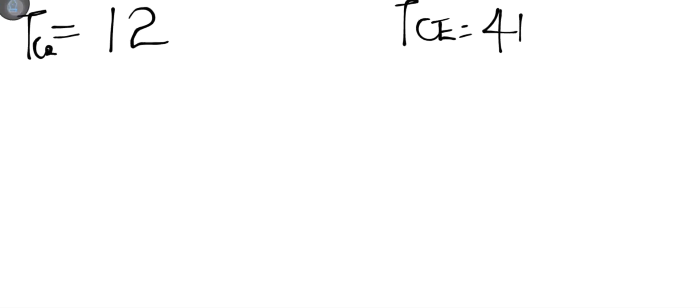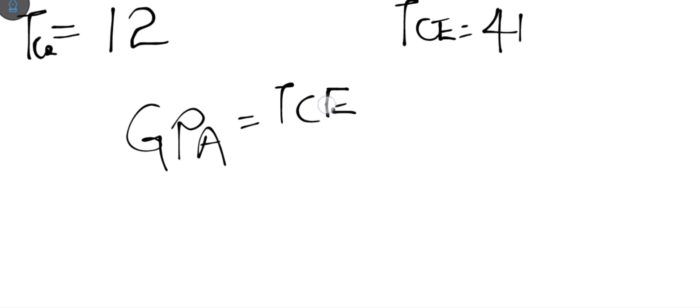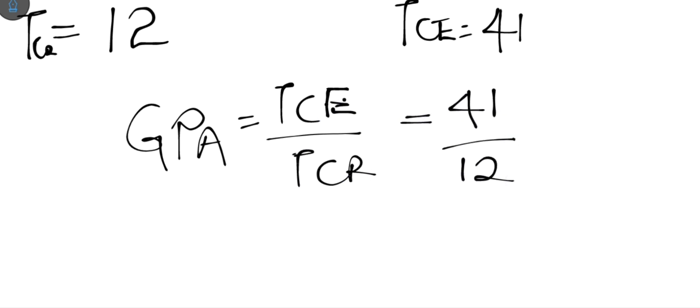The GPA for this second semester is TCE ÷ TCR = 41 ÷ 12 = 3.42 to two decimal places. Remember, what matters most is not the individual semester GPA, but the cumulative grade point average across all semesters.